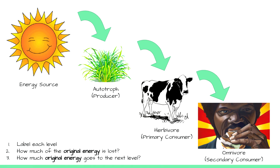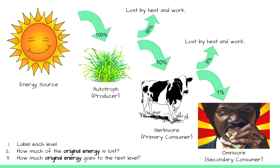Samuel L. Jackson is an omnivore, and in this food chain he is a secondary consumer. The grass gets 100% of the energy from the sun. The grass loses 90% to work like growing and reproducing, so only 10% of the original energy is actually consumed by the cow. The cow loses 9% of the original energy to work and heat, so only 1% of the original energy is actually consumed by Samuel L. Jackson.